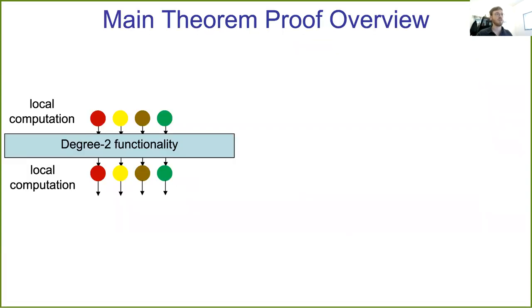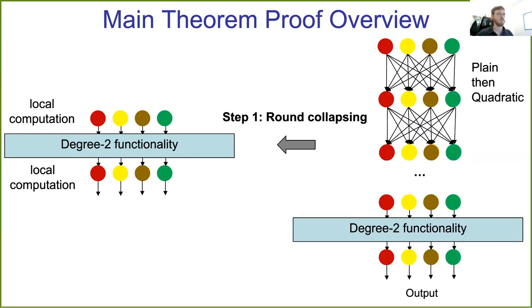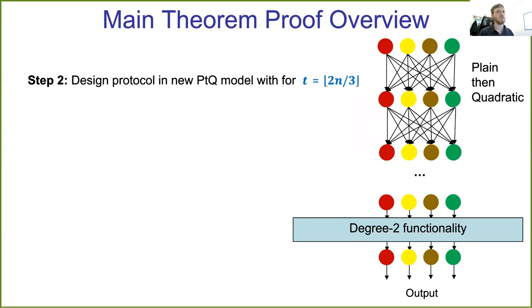Let us have a quick overview of our main theorem proof. The proof is in two steps. In the first step, which we call round collapsing, we show that allowing a plain model conversation to happen before the degree-2 functionality of 2MPRE adds no strength. So we show how to compile a protocol in this plain then quadratic model to a 2MPRE. And in the second step, we construct a protocol in this new plain then quadratic model with the desired privacy threshold.